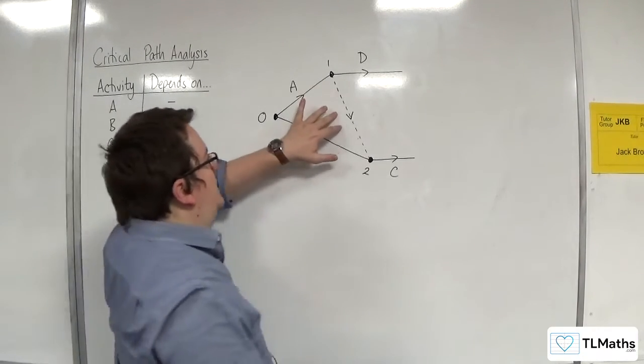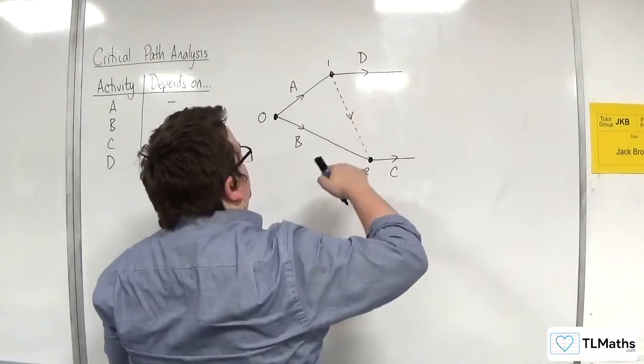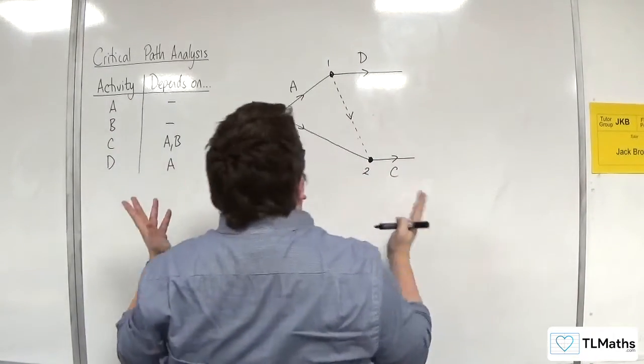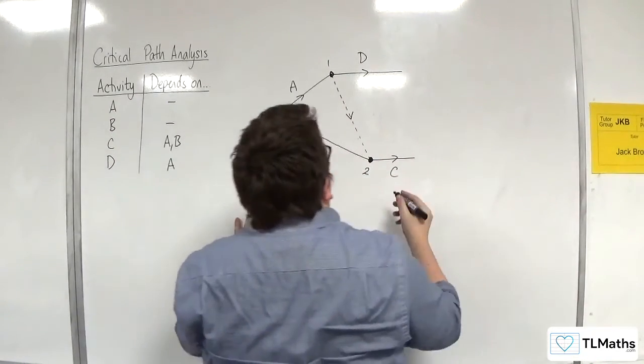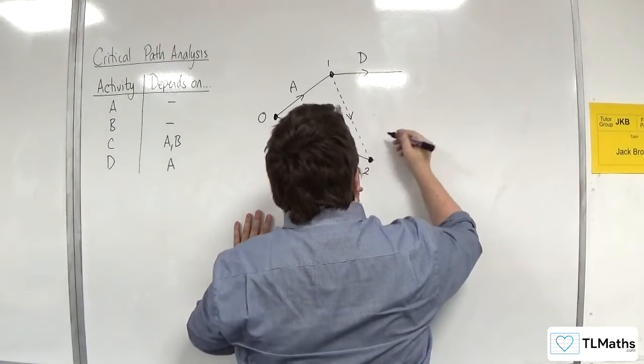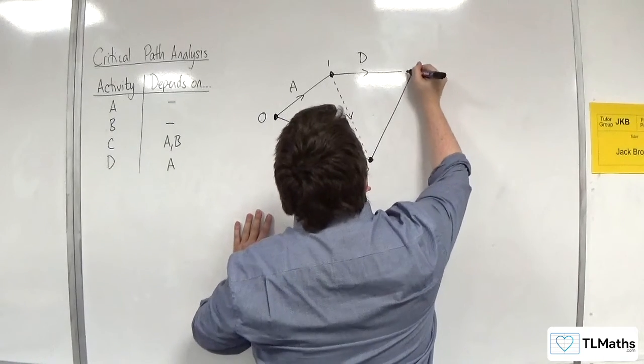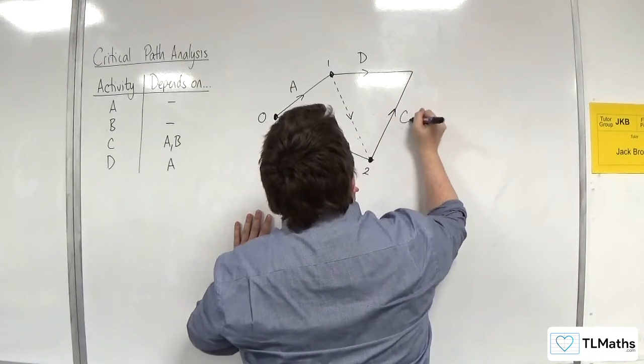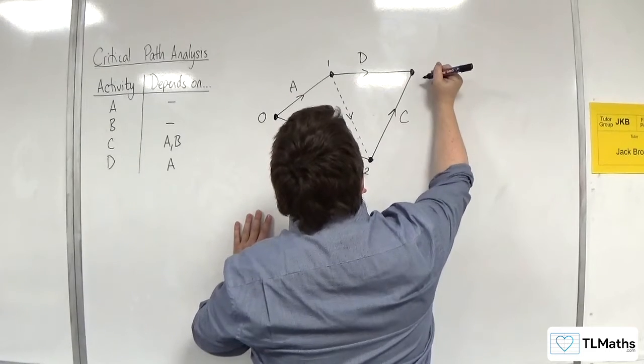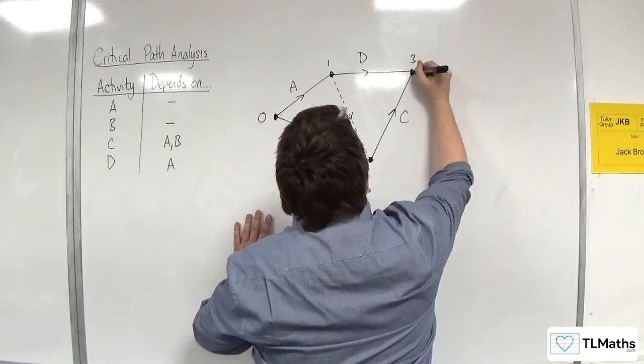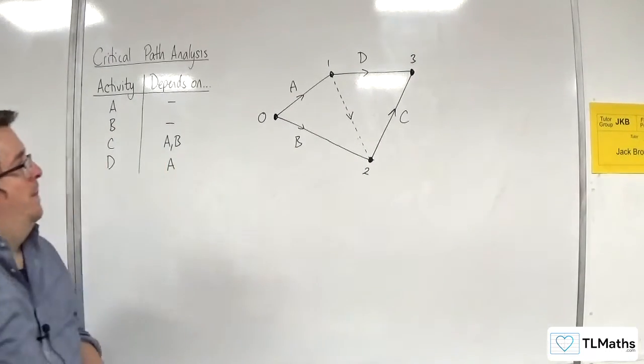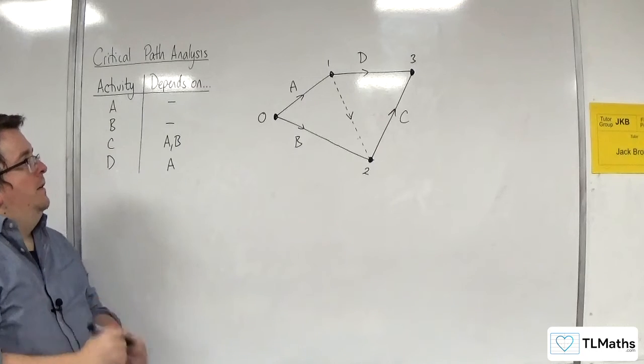So that's my dummy activity represented by a dashed line. So now, I need to finish this off by connecting C and D. So I'm going to redraw C, so it's going up something like that. There's C connecting at this node. I'll call that 3. And that's my finishing node, my sink.